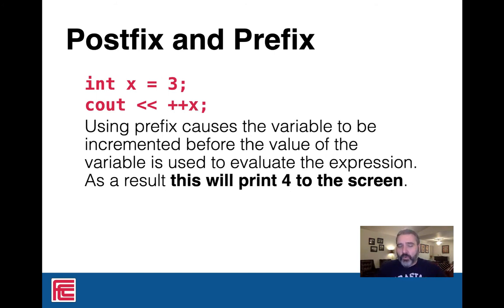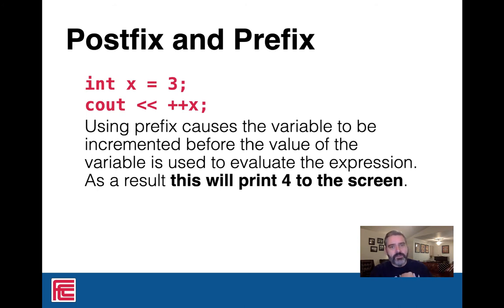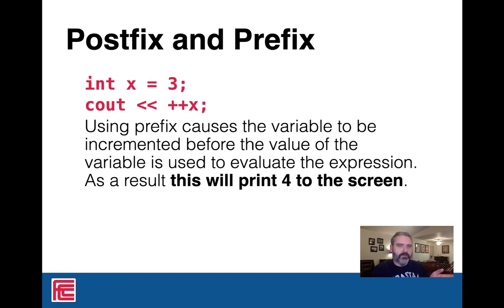If you wanted to print four to the screen, you just flip it. Now this is prefix — we add one to x and reassign that value back to x first, and then evaluate the expression for the cout. So this will actually print four to the screen because we added first. The plus plus part comes before the variable — do the plus plus part first before you evaluate the variable. The hint is actually in the notation itself.